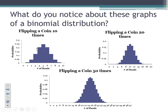If I flip a coin 20 times, same idea. If I'm flipping a coin 50 times, same idea. What you should notice is that all of those graphs are symmetric and unimodal — their peak is at the center, the mean, right in the middle.